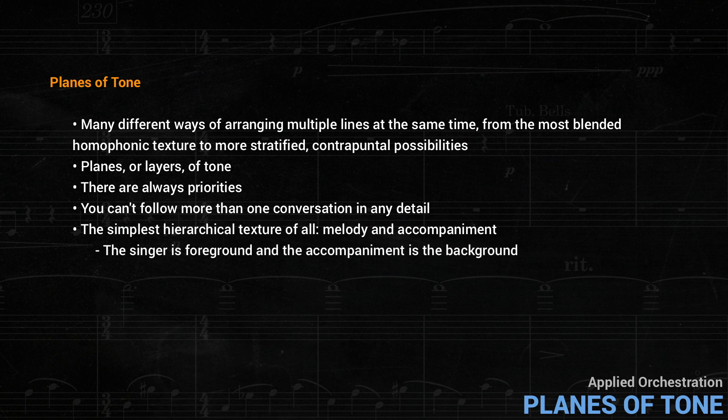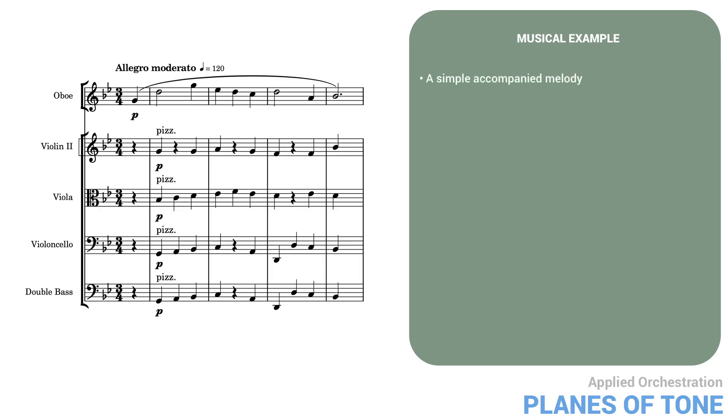The singer is the foreground, and the accompaniment is the background. Let's look at an instrumental example. Here's a simple accompanied melody.